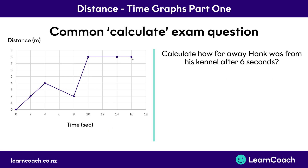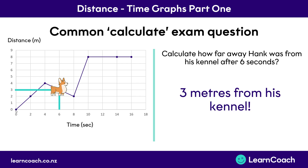Let's look at some common exam questions. First: calculate how far Hank was from his kennel after 6 seconds. Go along the horizontal axis to 6 seconds and draw a vertical line up to the graph. Where it hits the graph is Hank's position. Then draw a horizontal line across to the distance axis. The answer is that Hank is 3 metres away from his kennel.